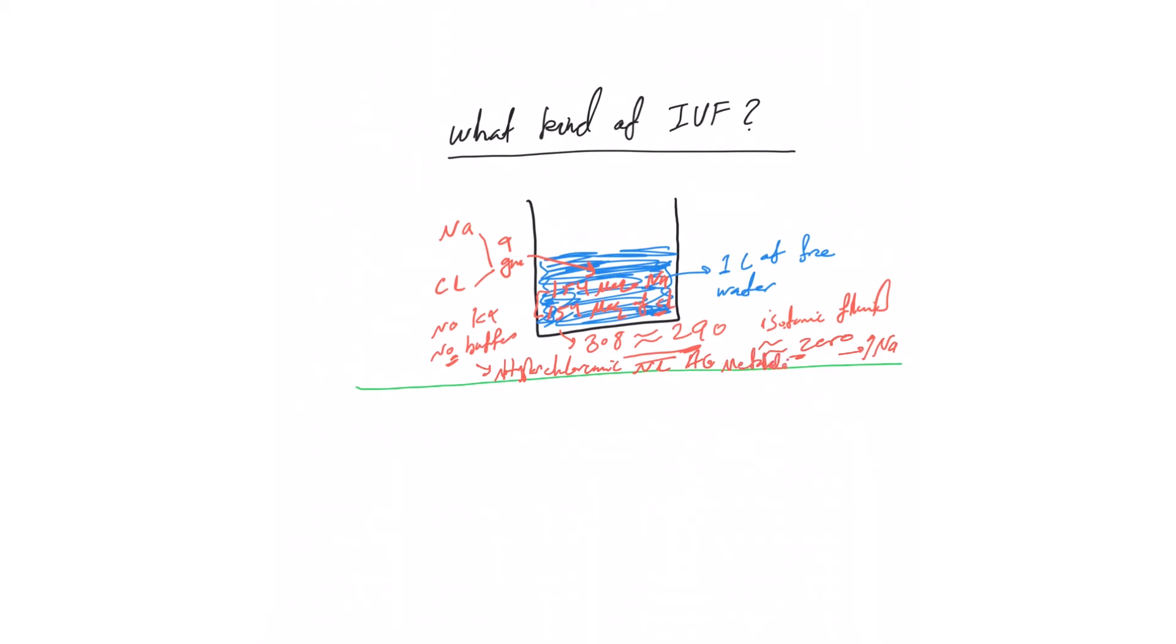Some of you may say there's other theories behind it, but I want to remind that this is just an easy way to remember that normal saline can cause hyperchloremic and normal anion gap metabolic acidosis.